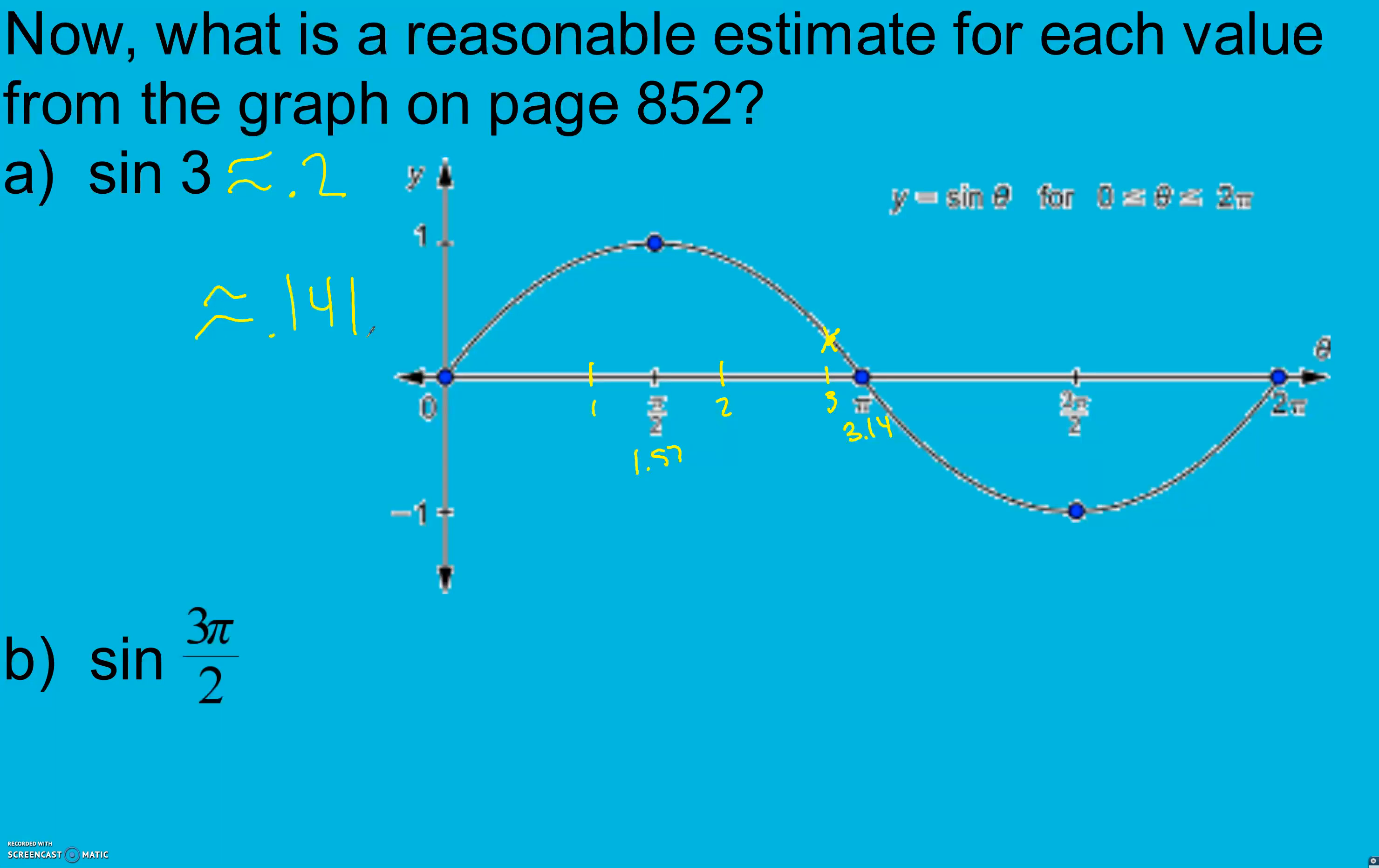Sine of 3 pi over 2 is what this says right here. And that's our lowest value, our minimum value, at negative 1. Remember, on a unit circle, everything is one unit away from the center. So our minimum is at negative 1. We can check it on our calculator. Sine of 3 pi divided by 2. Close your parentheses. We get negative 1.